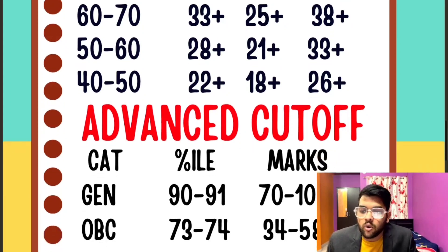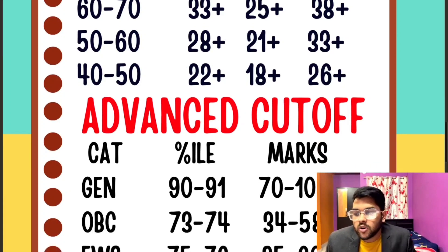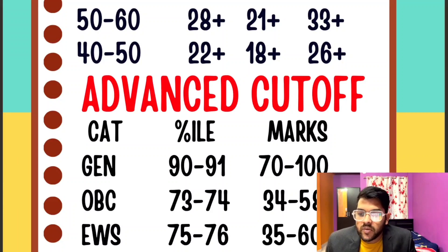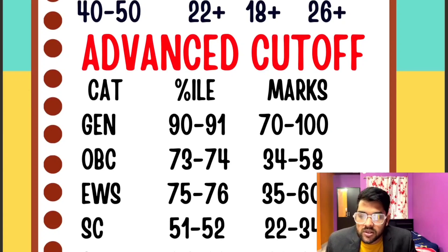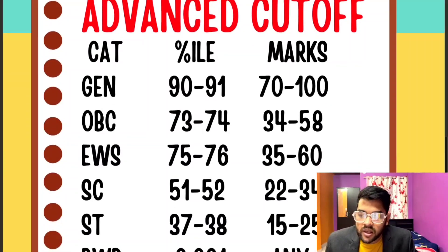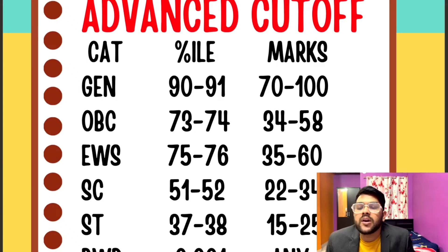For OBC category, 73 to 74 percentile is required, with marks of 34 to 58. For EWS, 75 to 76 percentile and marks of 35 to 60. For SC, 51 to 52 percentile and marks of 22 to 34. For ST, 37 to 38 percentile and marks of 15 to 25. For PwD, the simplest answer is: just go to the center — you are qualified for JEE Advanced.